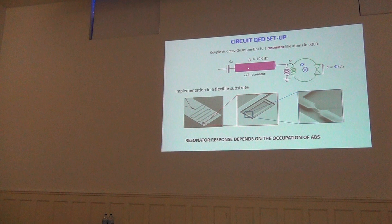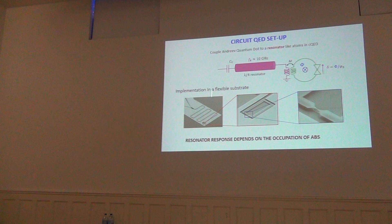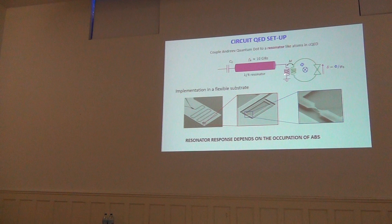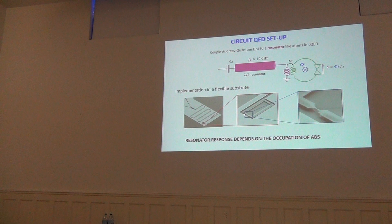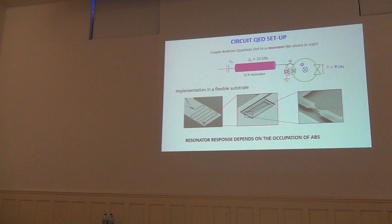This is a lambda-over-4 resonator: at resonance, the current profile shows zero at one end and maximum at the other end — a quarter wavelength. At the position of maximum current, there is a mutual inductance coupling with the superconducting loop. This loop contains the atomic contact instead of a standard Josephson junction, and we can impose the phase by threading magnetic flux.